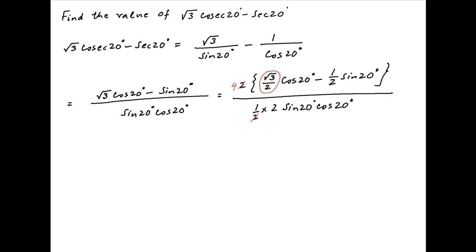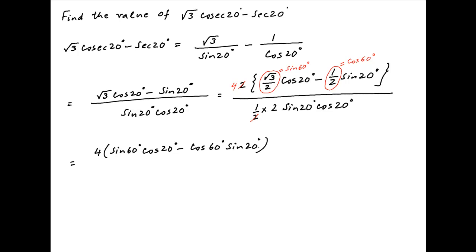Now note that root 3 upon 2 in the numerator is equal to sin 60 degrees, and half is equal to cos of 60 degrees. Therefore, this expression simplifies to 4 times, in brackets, sin of 60 degrees times cos of 20 degrees minus cos of 60 degrees times sin of 20 degrees, divided by 2 times sin of 20 degrees times cos of 20 degrees, which is equal to sin 40 degrees.